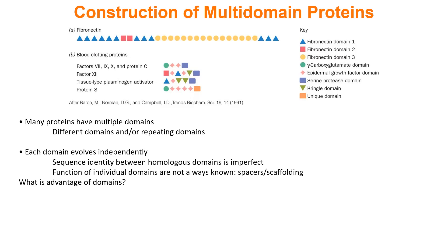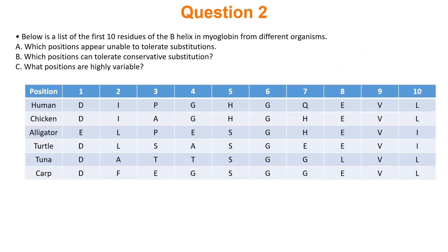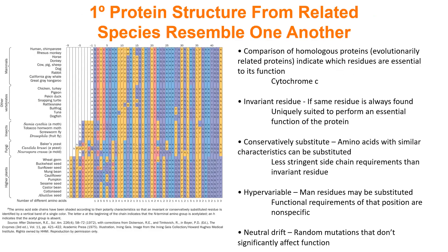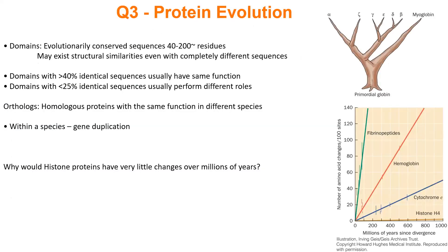Let's continue talking about what we were talking about on Wednesday. We finished up talking about protein evolution, where we're looking at sequencing different proteins and comparing the sequences of proteins that are similar in different organisms, seeing what amino acids have changed or which ones have not changed. That tells us information about whether certain amino acids are important for function. So we just have a few more things to talk about regarding protein evolution.